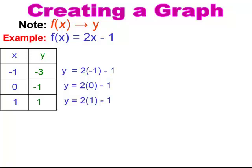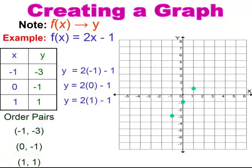Now that I have my table of values filled out, I can create my ordered pairs. Ordered pairs are the points you'll be plotting on the coordinate plane — the first value is X and the second is Y. I plot (-1, -3), then (0, -1), then (1, 1). Once your points are plotted, you draw the graph — in this case it ends up being a line. This is using a table of values to graph an equation.